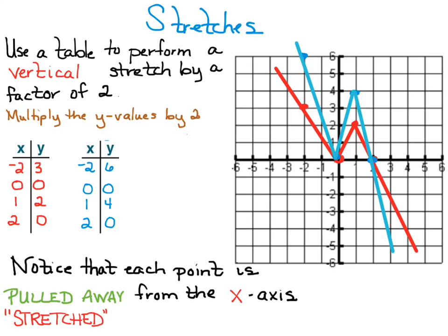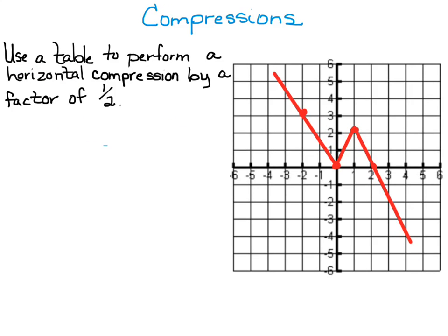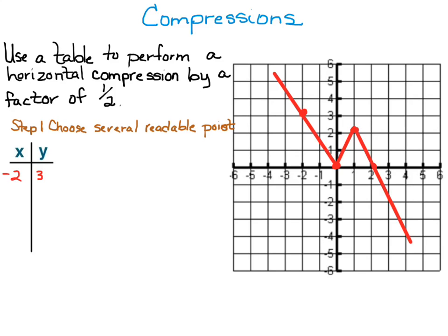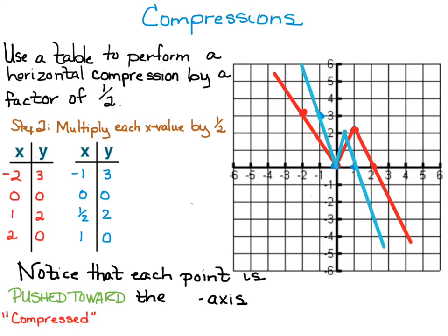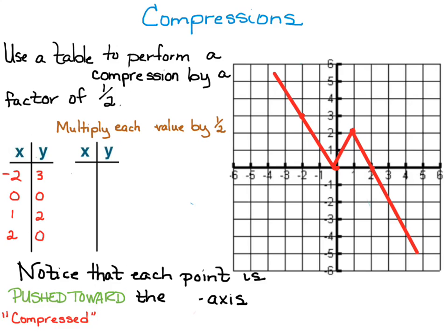Now let's take a look at compressions — think of compressions as squashing. Use a table to perform a horizontal compression by a factor of one-half. Since it's horizontal, we're going to multiply each x value by one-half and graph those points. This time you can see that the red graph looks like it's been pushed toward the y-axis, or compressed towards the y-axis.